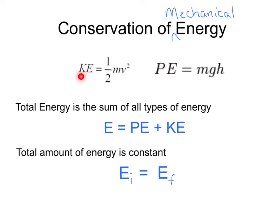Kinetic energy depends directly on speed or velocity, and potential energy depends directly on height. Thus, the total energy is the sum of all types of mechanical energy. So the total energy E is the sum of potential and kinetic. And we know that the total amount of energy is constant or conserved.